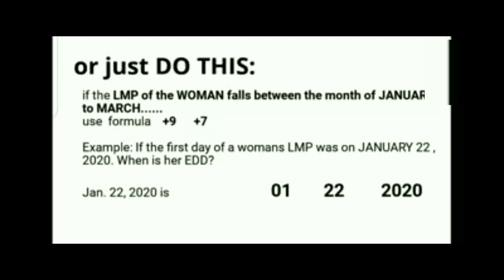Alternatively, if the LMP falls between January to March, use the shortcut formula: plus 9 (month), plus 7 (day). This is faster. For example, if the first day of a woman's LMP was January 22, 2020, when is her EDD? Since it's January to March, we use plus 9 plus 7.